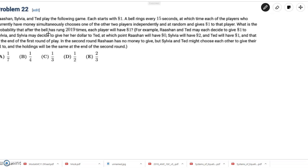This problem reads: Rashaan, Sylvia, and Ted play the following game. Each starts with one dollar. A bell rings every 15 seconds, at which time each of the players who currently have money simultaneously choose one of the other two players independently and at random, and gives one dollar to that player. What is the probability that after the bell has rung 2019 times, each player will have one dollar?